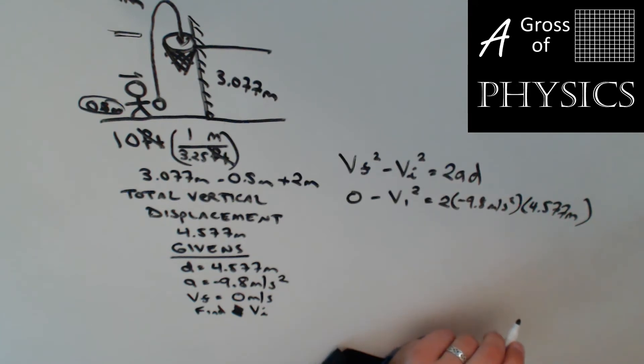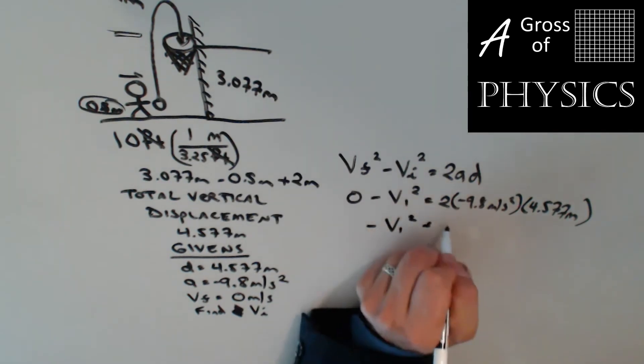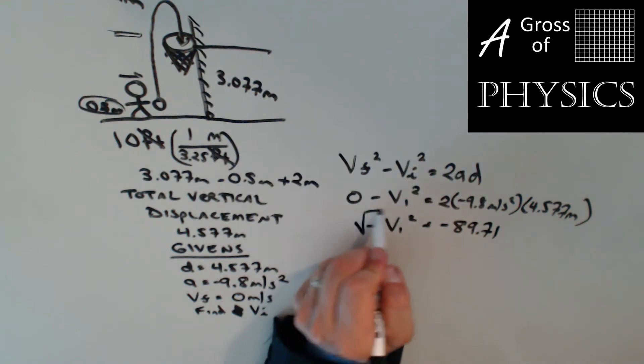I'm going to multiply 2 times 9.8 times 4.577. I'm going to get 89.71. So negative Vi squared equals negative 89.71. I'm going to take the square root.